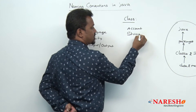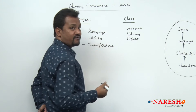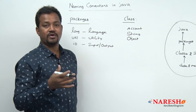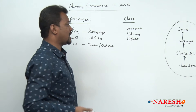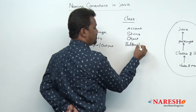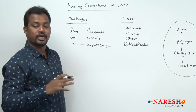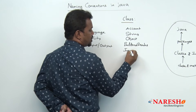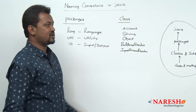For a class name like 'BufferedReader' — B should be capital, R should be capital: 'BufferedReader'. For 'InputStreamReader': I, S, and R should all be capital — 'InputStreamReader'. This is the way of writing your classes. Whenever you want to write or represent one class within the programming code, the starting letter of every word must be capital.